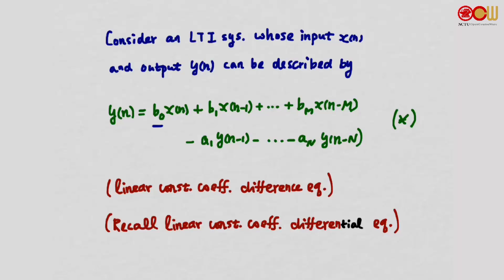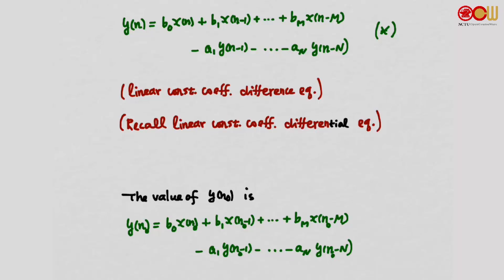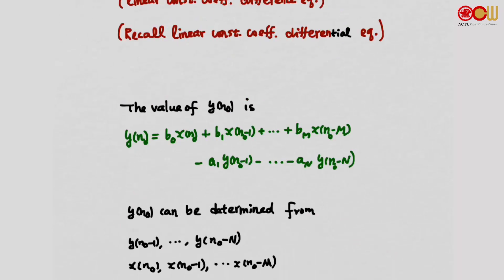We call it a linear constant coefficient difference equation because the coefficients b0, b1 to bm, and a1 to an are constant — they are parameters of the system given to us. If we would like to find the value of yn0, the output at time n0, we simply plug in n0 everywhere in the equation. This means if we know xn0, xn0-1 to xn0-m, and also the past values of y from n0-1 to n0-n, we can compute the current output value at n0.